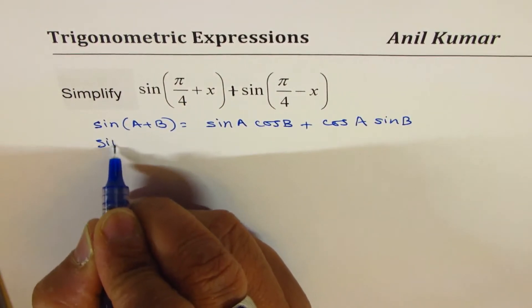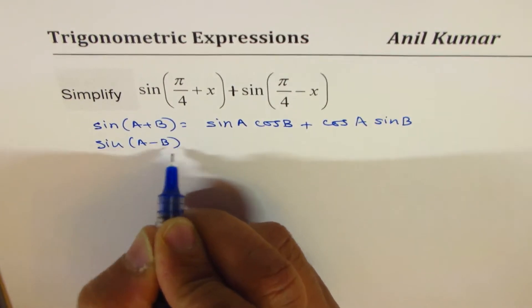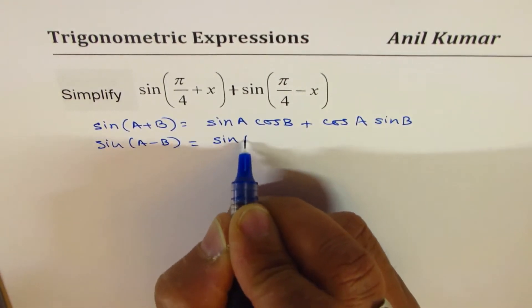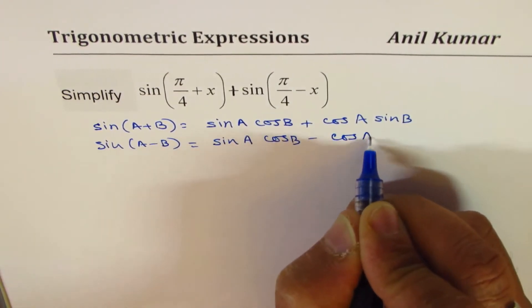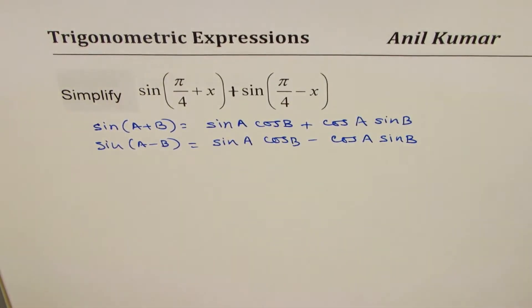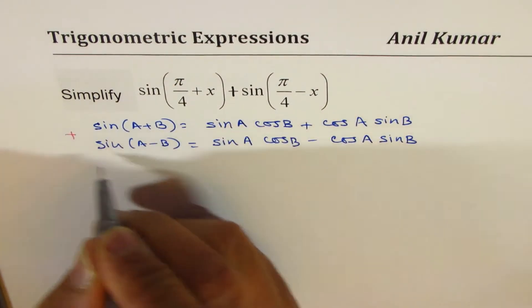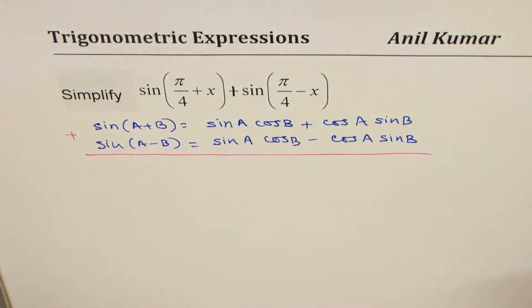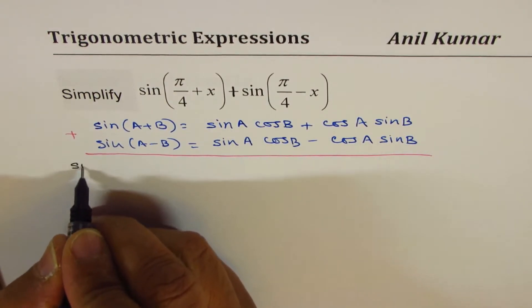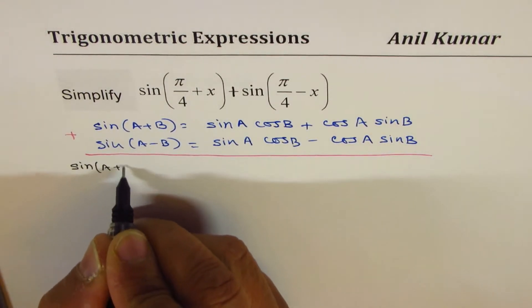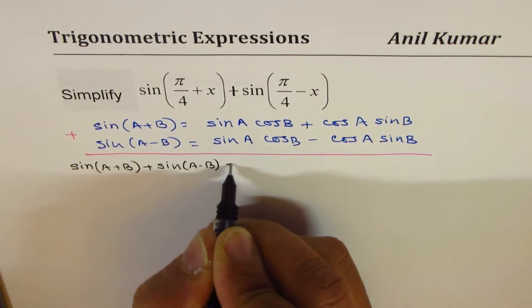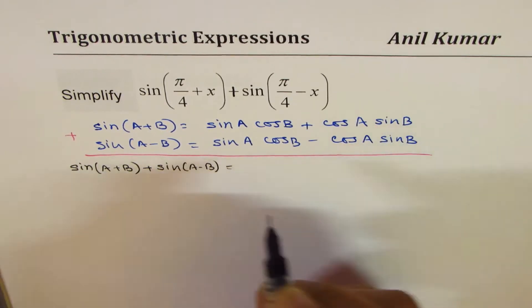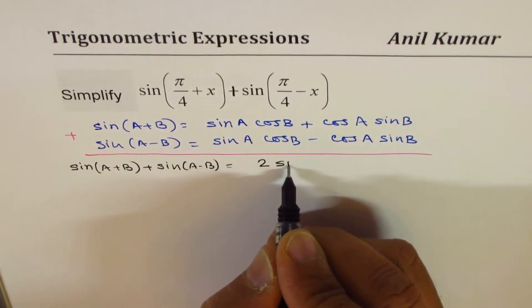Also, what is sin(a − b)? Sin(a − b) = sin a cos b − cos a sin b. Now if I add them up, we get our formula: sin(a + b) + sin(a − b). The two cos a sin b terms cancel, and we get 2 sin a cos b.